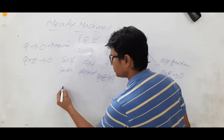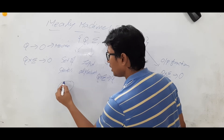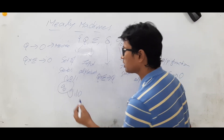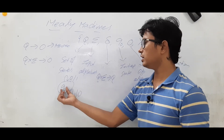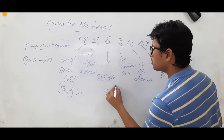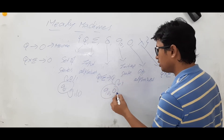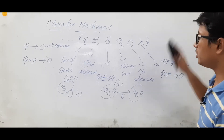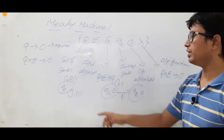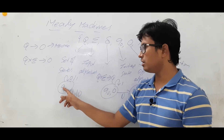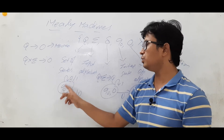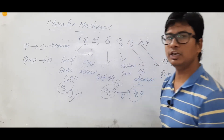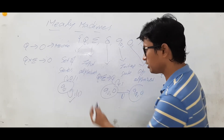For a better understanding, let me take an example. I am in state q0. If the input is 0, I want to get the output as 1. If the input is 1, I will get the output as 0. So q0 on input 0 generates output 1, and q0 on input 1 generates output 0. This Mealy machine calculates the 1's complement.